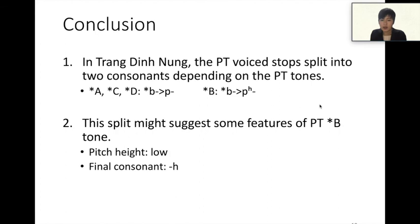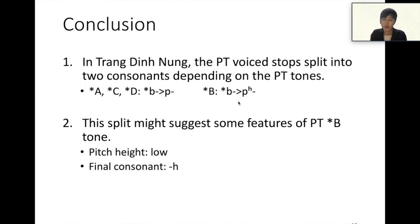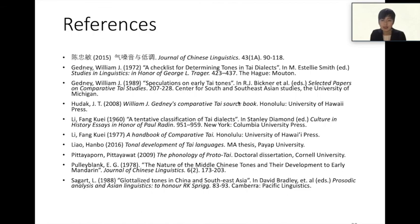I would like to summarize the main findings in this presentation. First, in Chanding NUN, prototype voiced stops split into two consonants depending on the prototype tones. Second, this one-into-two split is very important for understanding the prototype B-tone. This phenomenon might show that the pitch height of the B-tone was low and derived from *h. This is the end of my talk. Thank you for your kind attention.